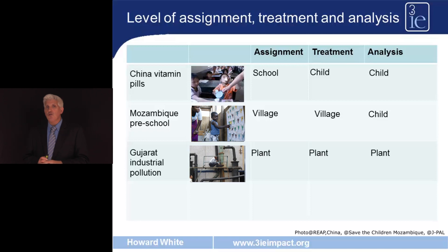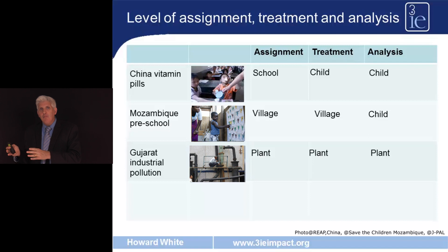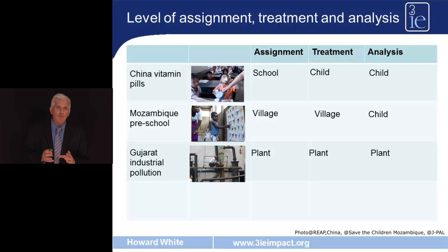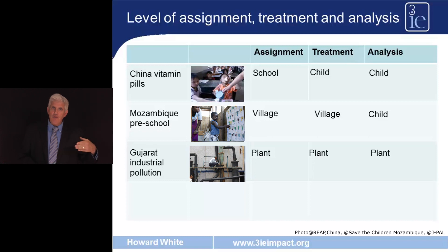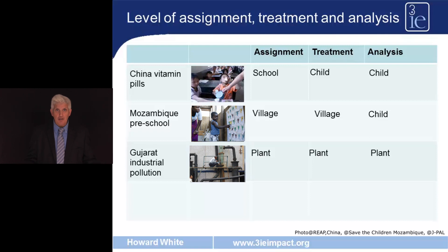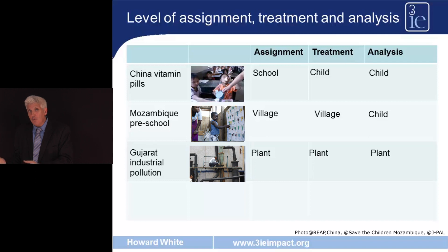The final example comes from Gujarat in India, where a programme examined the regulatory mechanism for controlling industrial pollutants from plants. They identified 473 plants for the study, of which 233 were randomly assigned to the treatment group receiving the new regulatory mechanism, and the remaining 240 served as the control group under the existing mechanism. In this case, the unit of assignment, treatment, and analysis are all the plant, because we're looking at plant-level emissions.